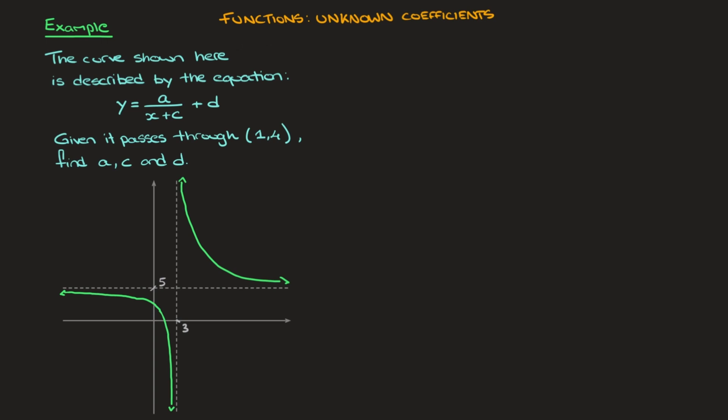In this video on functions with unknown coefficients, I'm going to be working through the example that we see here, in which we're given a rational function which we can see has a horizontal asymptote as well as a vertical asymptote, and its equation is given to us right here. And we can see that it has three unknown coefficients.